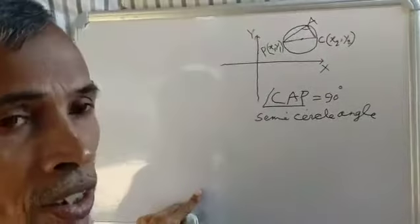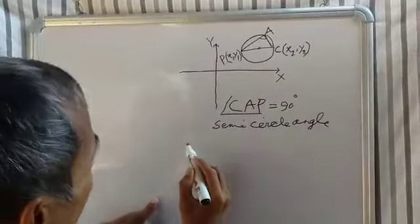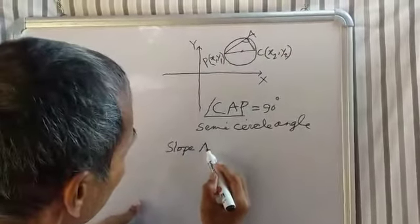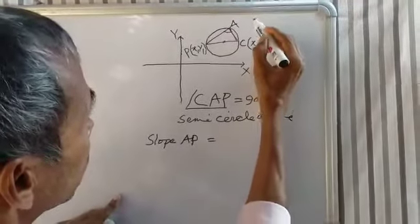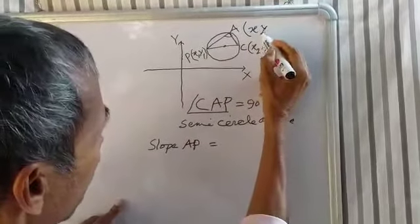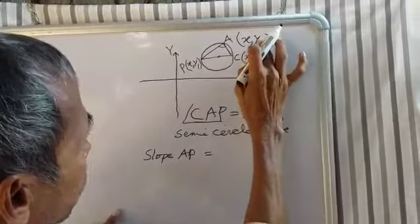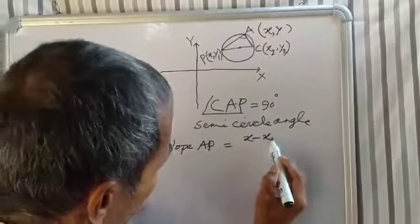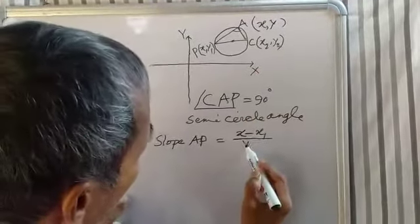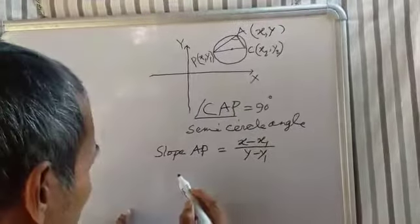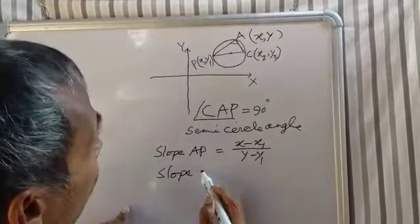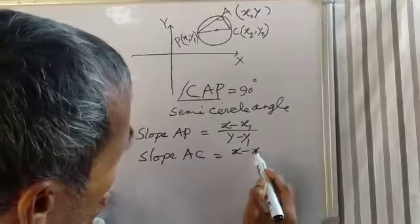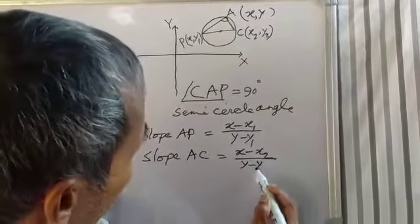Now slope, slope of AP. Let this point be (x, y). Therefore, slope of AP equals (x minus x1) by (y minus y1). Slope of AC equals (x minus x2) by (y minus y2).